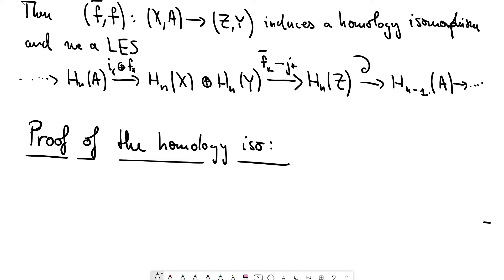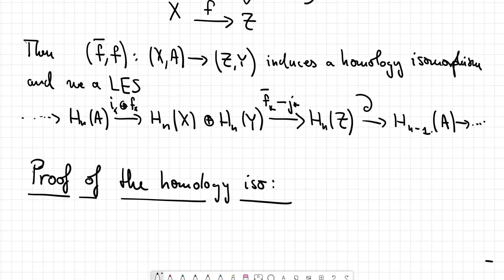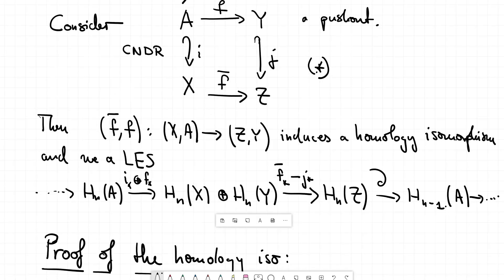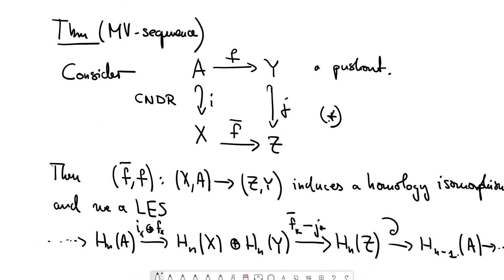So in this pushout, let me bring it into the picture again. The general fact that if you form the quotients of X mod A and Z mod Y, you still get an induced map by F bar and F. And this map is a homeomorphism.